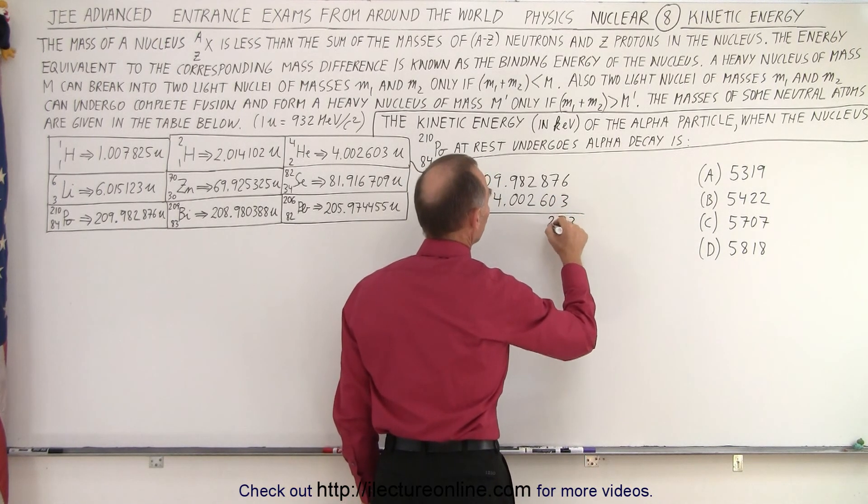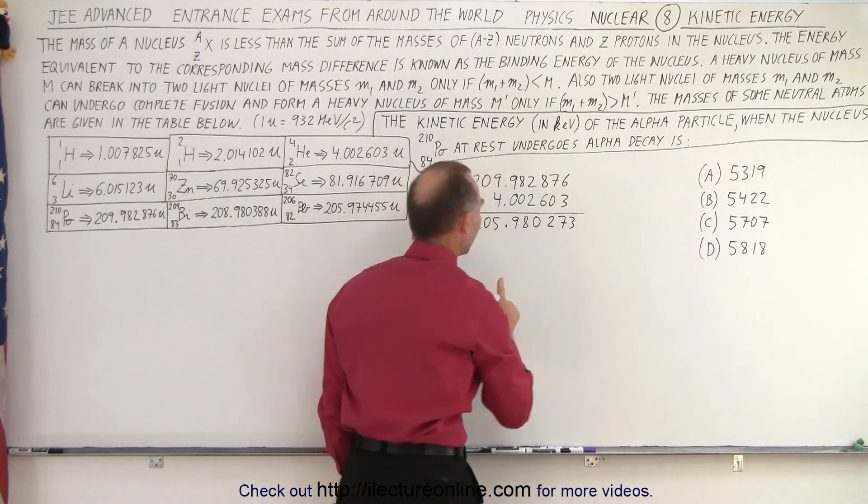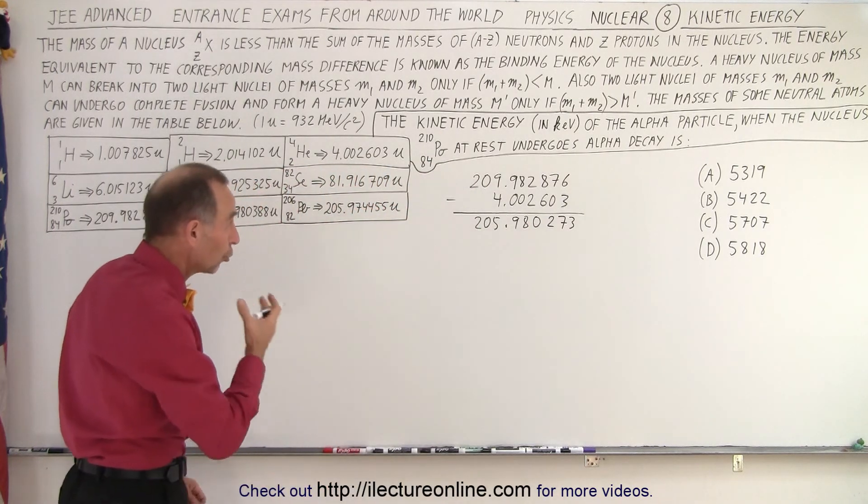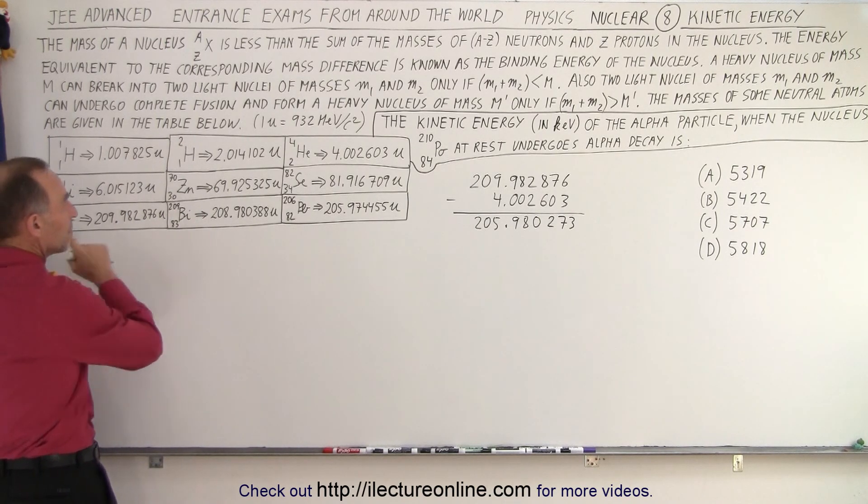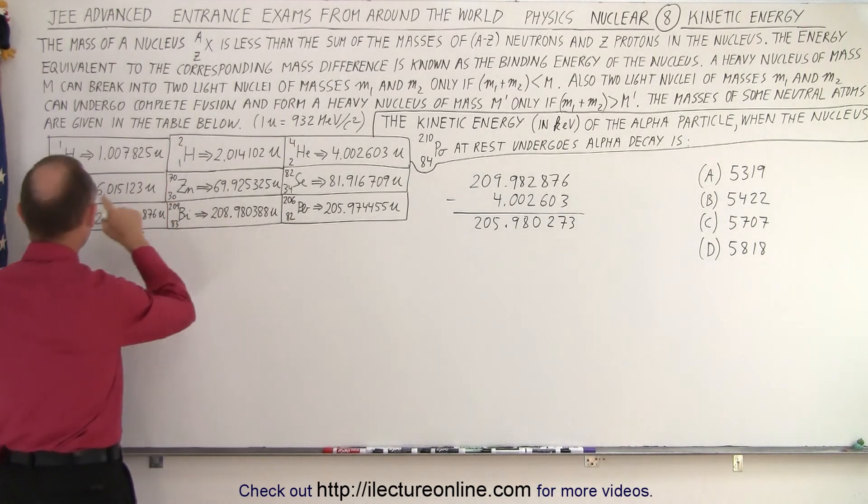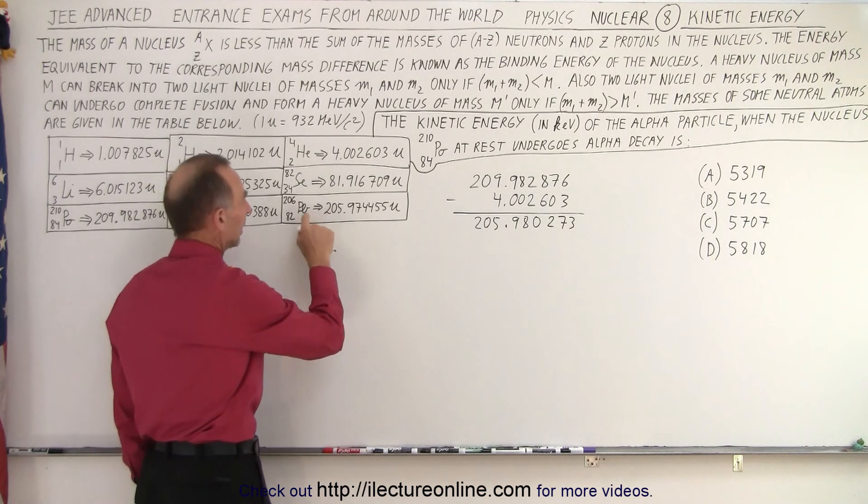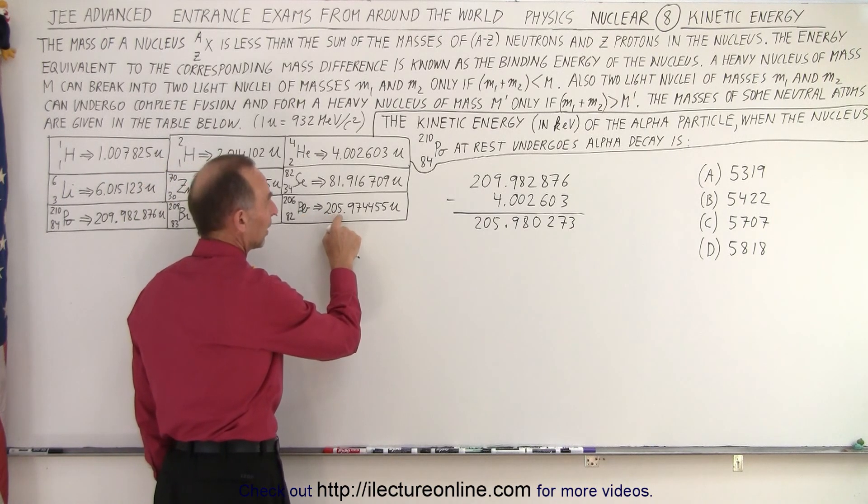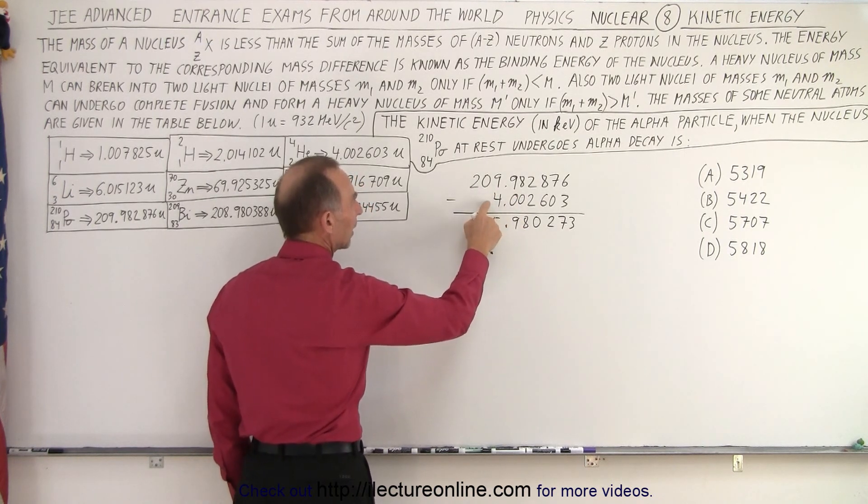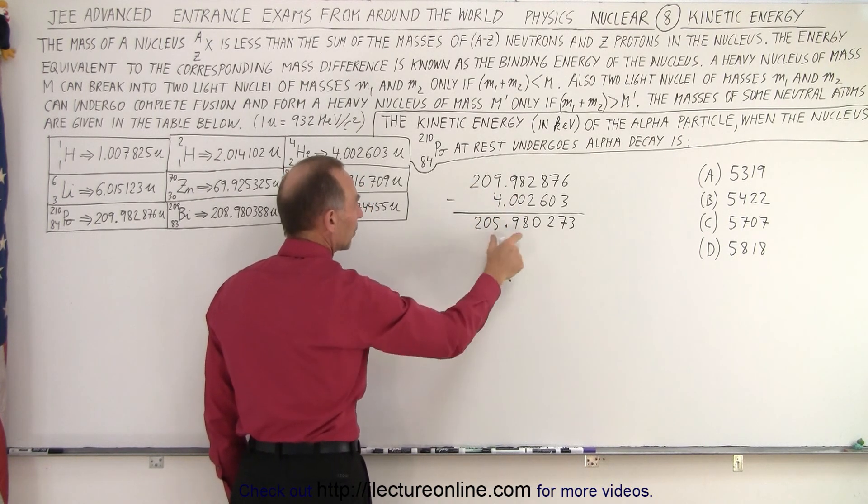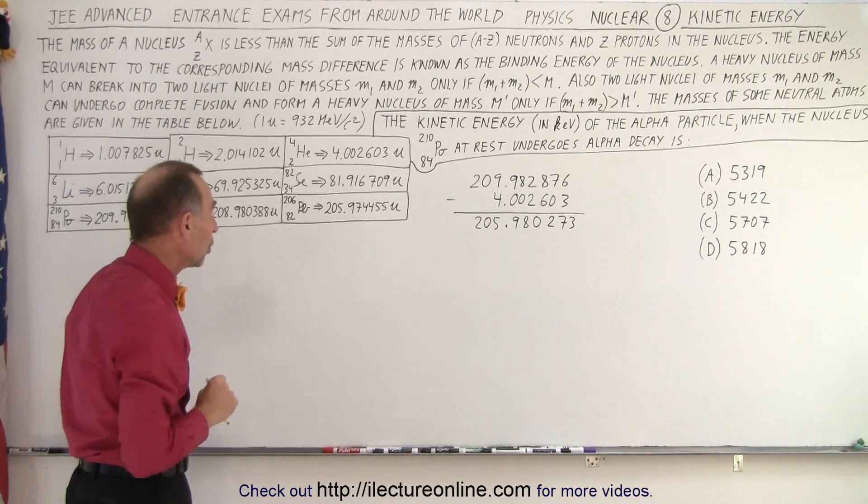So we have the mass of a polonium right here, 209.982876. That's how much mass we start with. And then we subtract from that the alpha particle that's being emitted, which is 4.002603. And if we subtract that, we get 205.980273. What do we end up with when the polonium shoots out an alpha particle? We end up with two less protons. Now we have 82 protons, which makes it into lead. We have four less nucleons, from 210 down to 206.